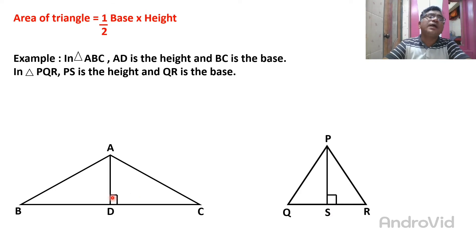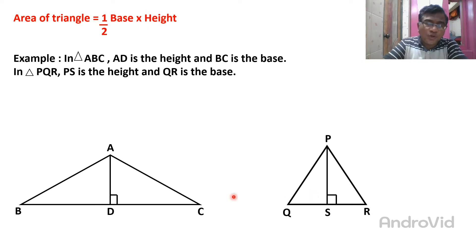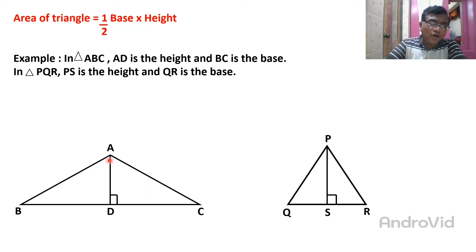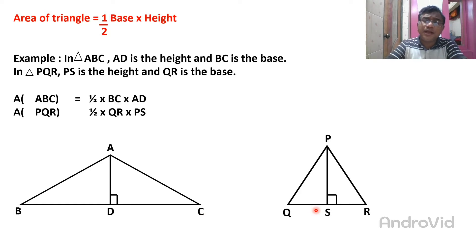So you can see these two triangles — one is triangle ABC and another is triangle PQR. Is there anything the same in triangle ABC and triangle PQR? No. The base of ABC is BC and the base of PQR is QR. The height of ABC is AD — it is perpendicular, forming 90 degrees, so it is the height. And PS is the height of triangle PQR. So height and base they are not the same.